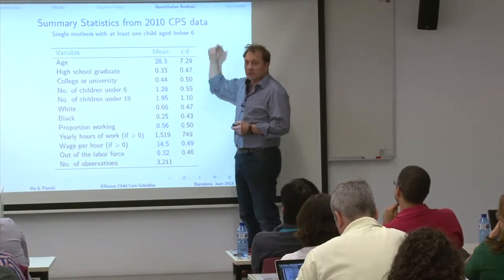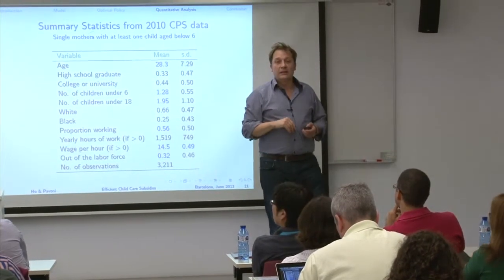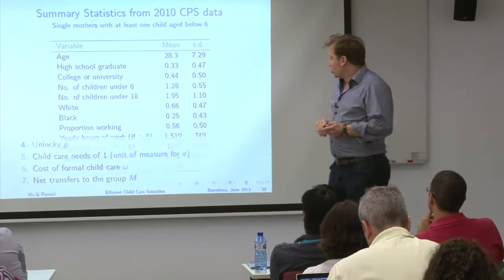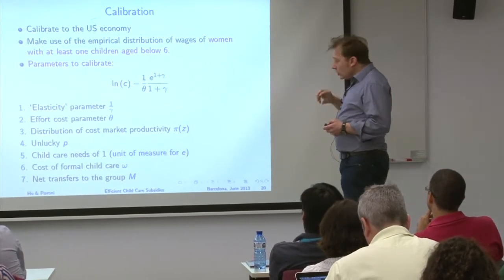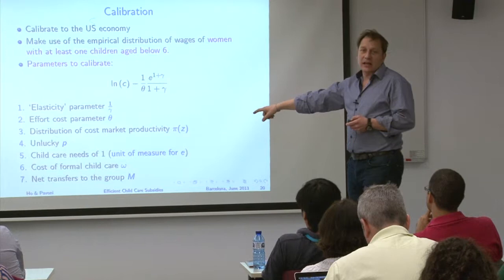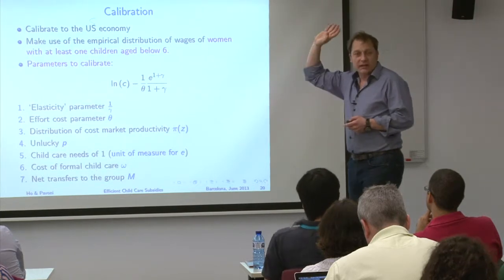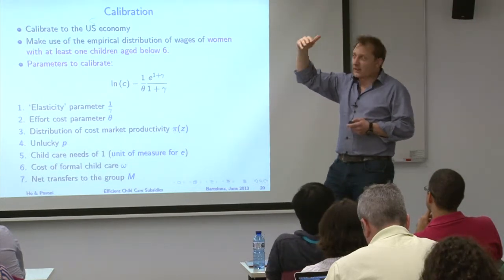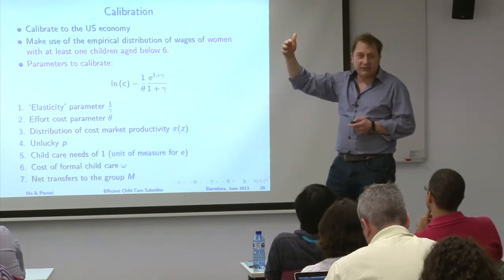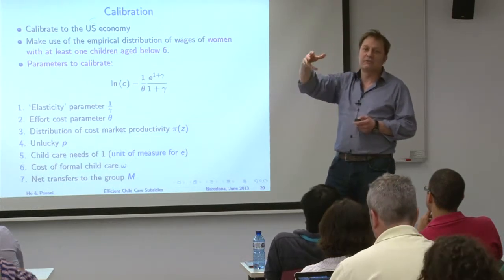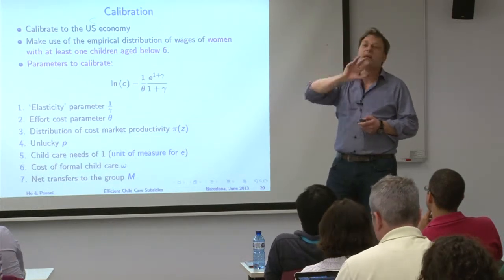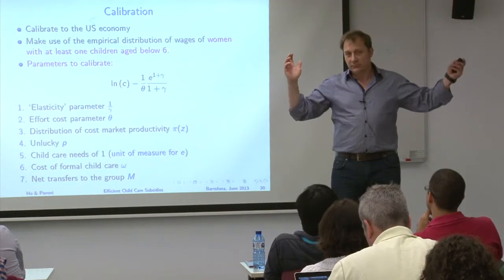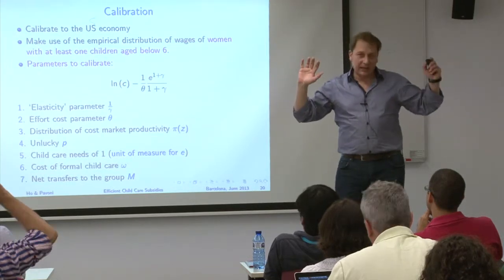On financing: the childcare subsidy is financed by computing M from the existing scheme. This means the society wants to give M to these people, and I keep that same number. It is a revealed preferences approach — using the existing scheme to infer how much society is willing to transfer to this group.